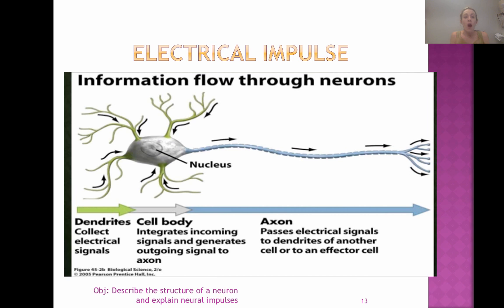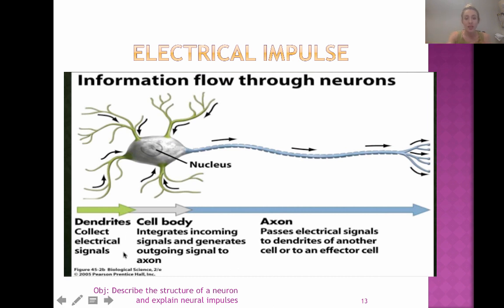One last thing: information flows through neurons in only one direction. The electrical impulse does not flow back from the terminal branches up to the dendrites — it only flows one way. The dendrites listen, the cell body integrates and figures out what's happening, and the axon sends the electrical signal all the way down to the next cell. That's all for now, AP Psychos — remember, psychology is flippin' awesome!